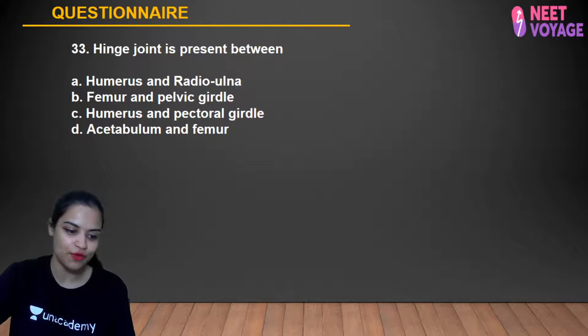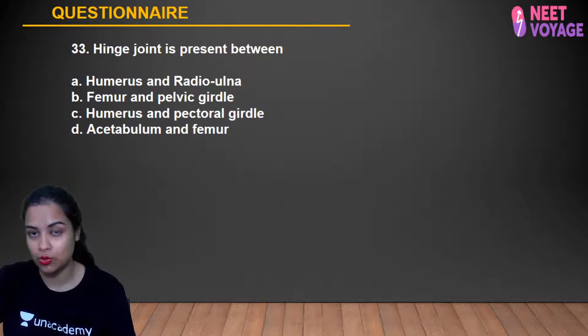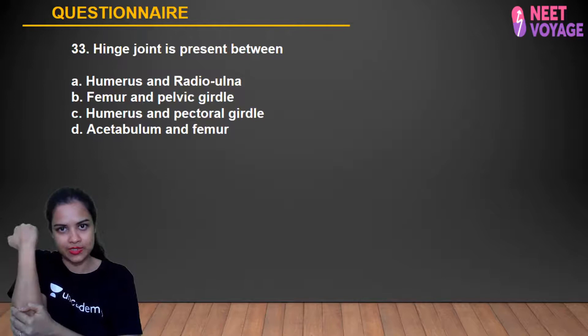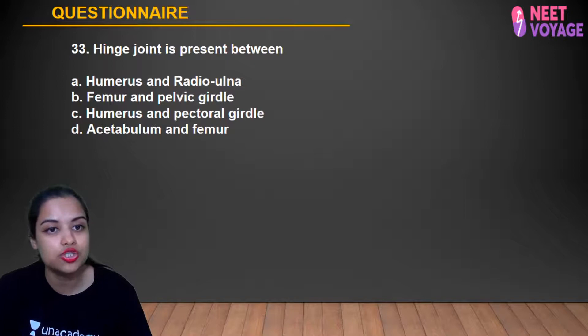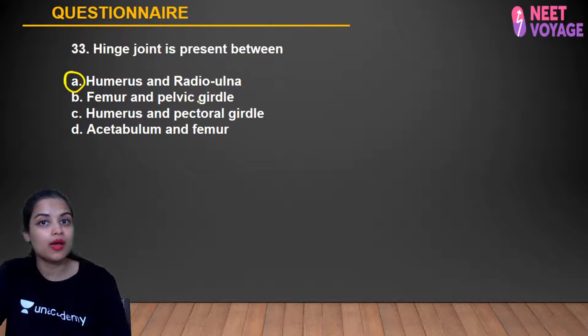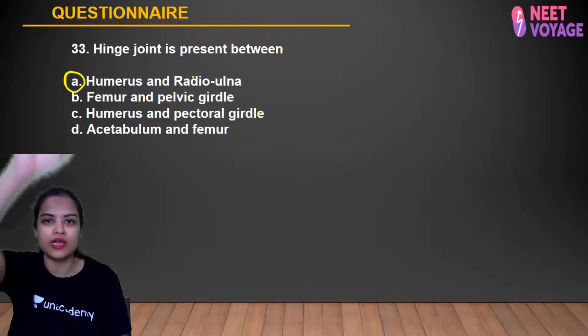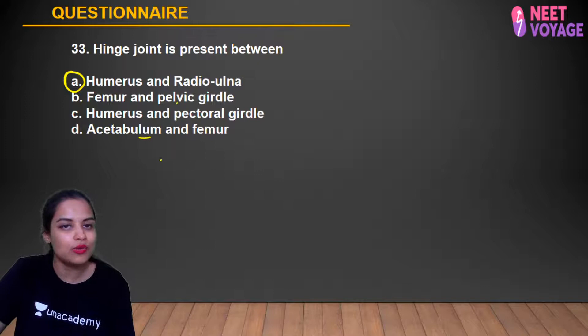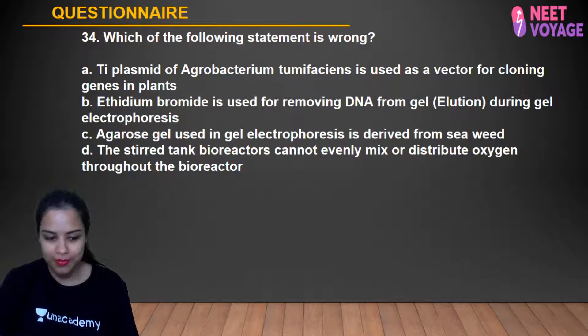Question 33: Hinge joint is present where? A hinge joint allows movement in one plane (like a door). The elbow — between humerus and radius/ulna — is a hinge joint. The knee (between tibia/fibula and femur) is also a hinge joint. Ball and socket joints are present at: femur and pelvic girdle (acetabulum), humerus and pectoral girdle. A (humerus and radius/ulna) is the hinge joint answer. Kamal, Anshika, Shashank, Samreen, Simran, Sabah, Anusha, and Alok gave the correct answer.